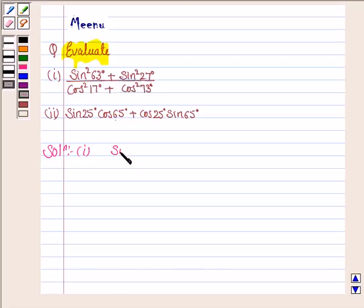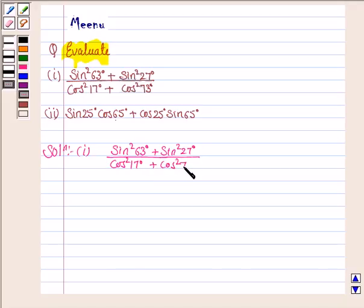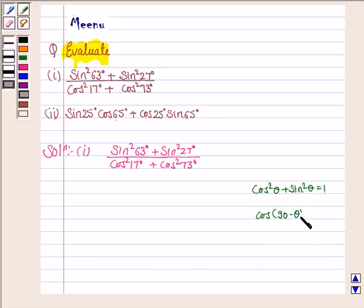The given expression is sin²63° + sin²27°, upon cos²17° + cos²73°. We know that cos²θ + sin²θ = 1, and also that cos(90° − θ) = sinθ and sin(90° − θ) = cosθ.